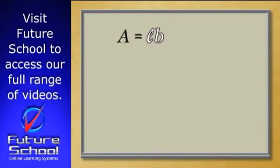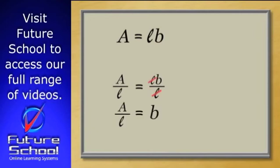LB really means L times B. So do the opposite operation and divide both sides by L. The Ls will cancel on the right, leaving just B. And on the left you have A over L.